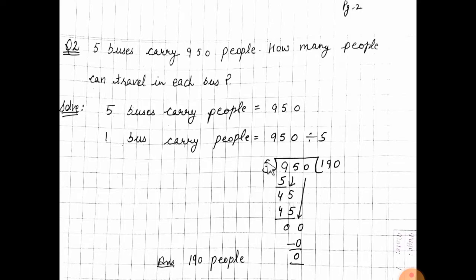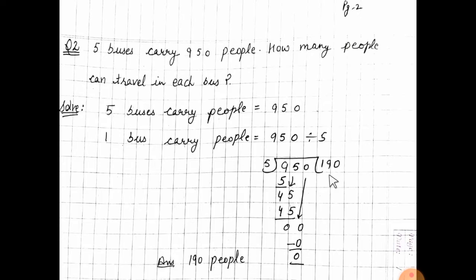5 का table जो है वो 1 तक read किया। अगर 2 पे करोगे तो 5 twos are 10 बढ़ गया, which means 5 ones are 5. अब 5 को 9 में से जब subtract किया तो 4 आया। अब next digit move करेंगे — 5, 45 बन गया। अब 5 का table 9 तक read करो — 5 nines are 45.